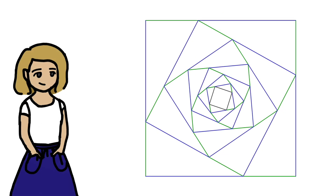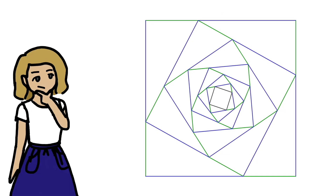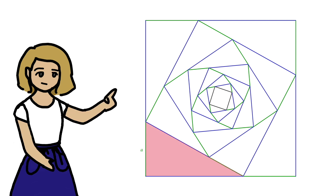So now we need to find the areas of the triangles. We can start with this one, with sides a and k minus a. Then the area of this triangle is one half times a times k minus a. That was easy enough.